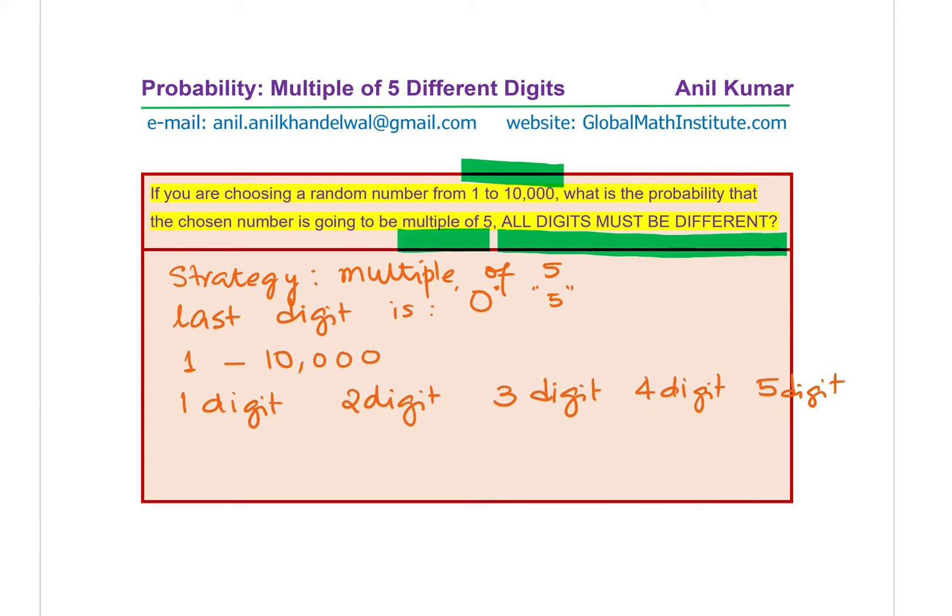As far as one digit number is there, it is very clear number 5 itself is a one digit number. As far as five digit numbers are concerned, we have one number which is 10,000. So basically, we have one number which is five digit and we have one number which is one digit number.